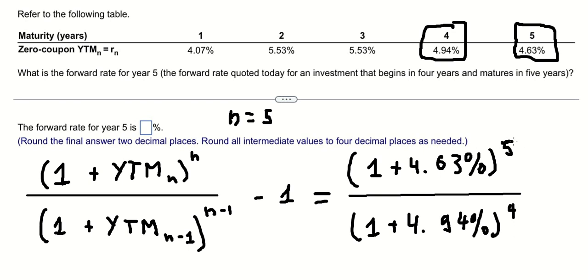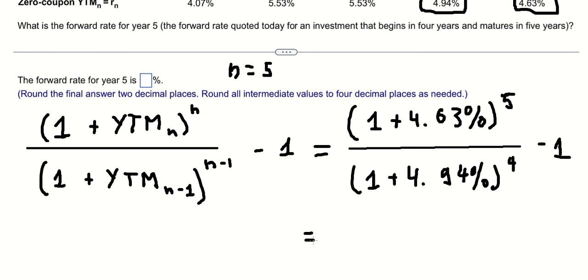This is number four, this is number five minus one. You calculate this and we have the final answer. We need to round to two decimal places, and that is about 3.40%.